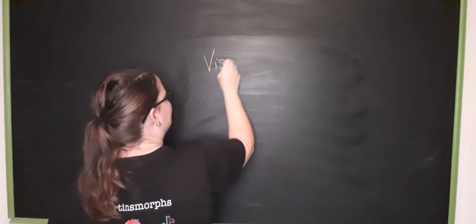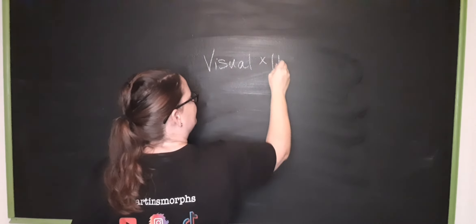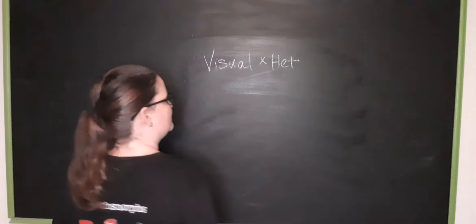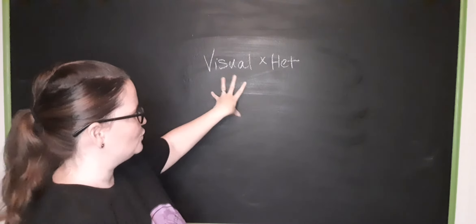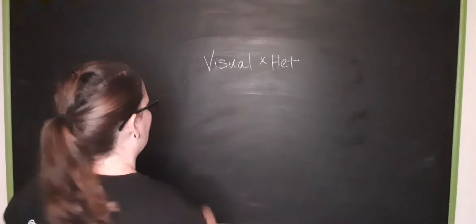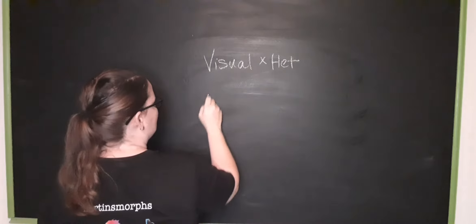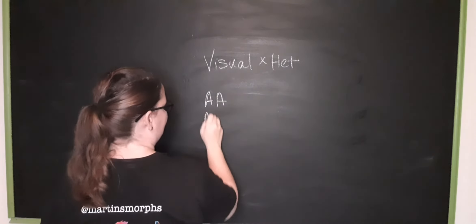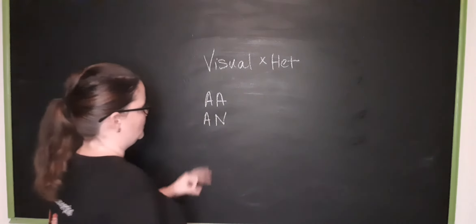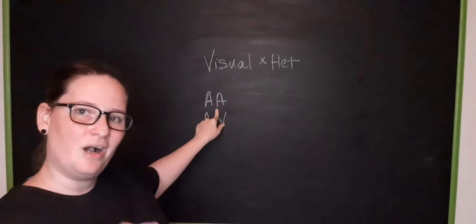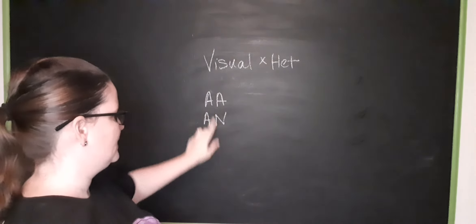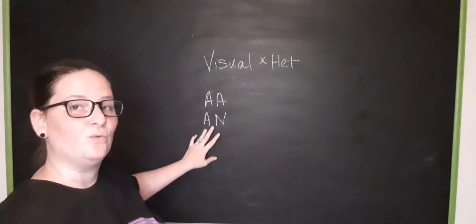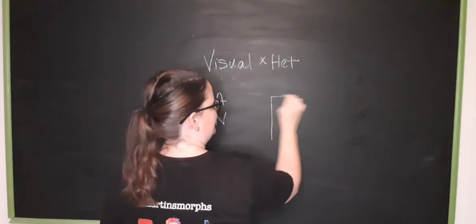Now I want to show you how we get 100 percent het. So you can breed a visual to a het. So the visual is going to carry two copies of the albino gene. The het is going to carry only one copy of the albino gene. Running the Punnett square.